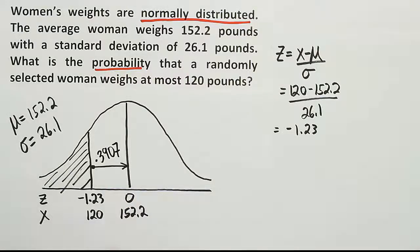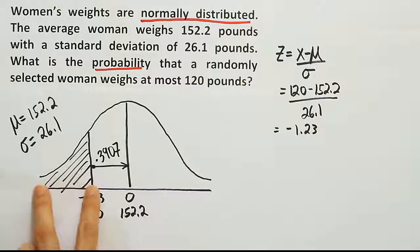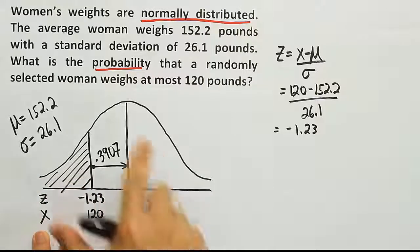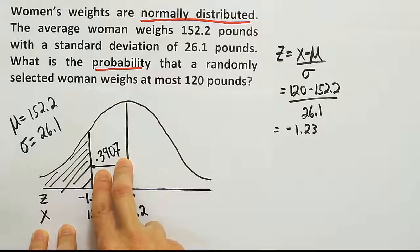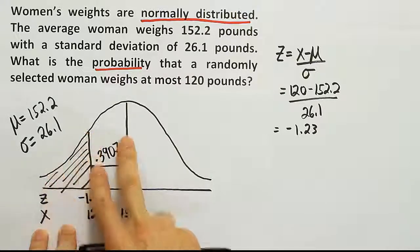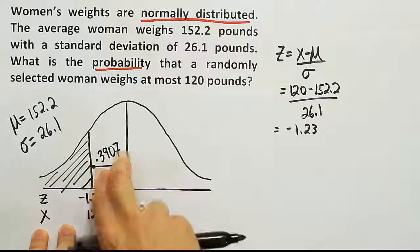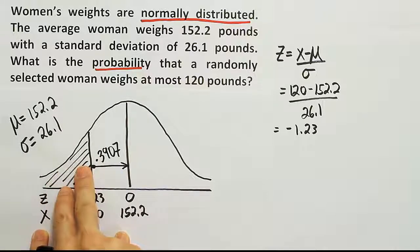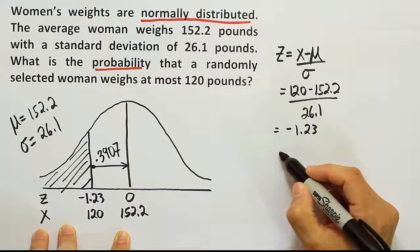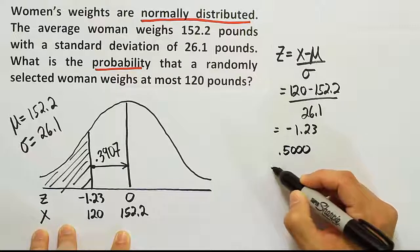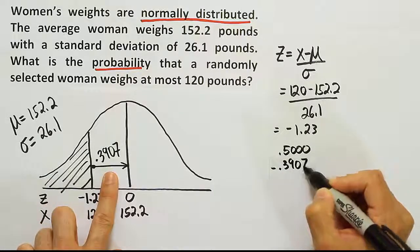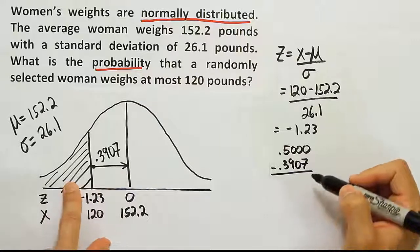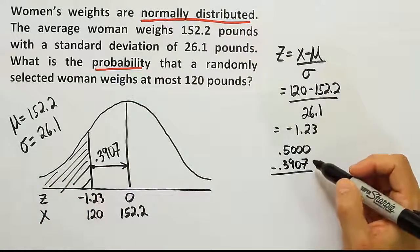That's the area here in the white space. To get the tail area, we have to use that little trick that says half the curve has 50% of the area. This part's about 39.07%, so we're going to subtract 39.07 from 50 to be left with the shaded area. The trick is to take 0.500 and subtract off 0.3907. That should give us the part we don't know, which is the shaded tail area.